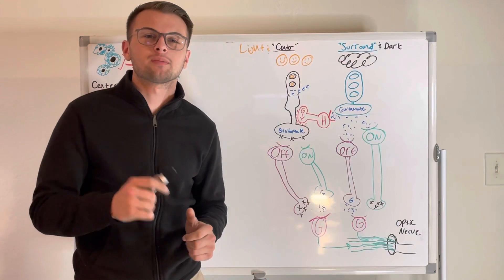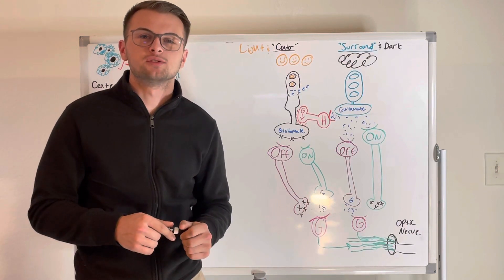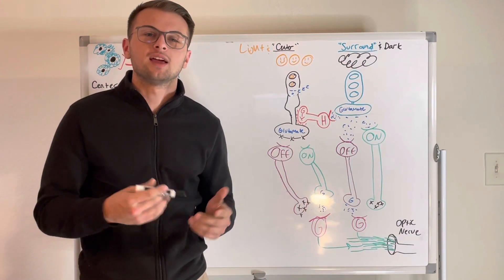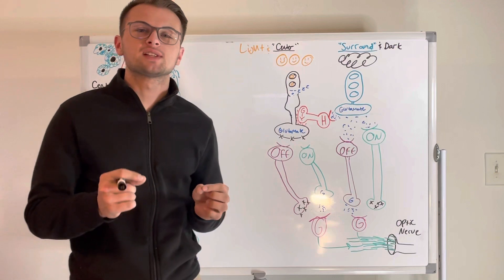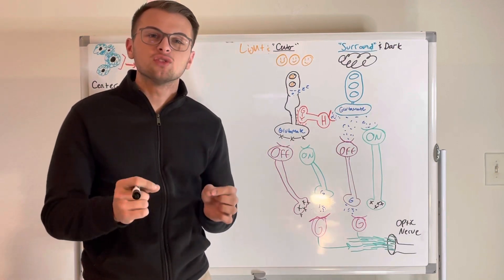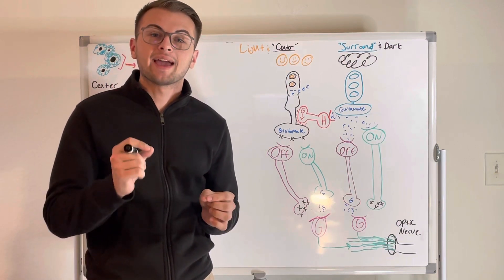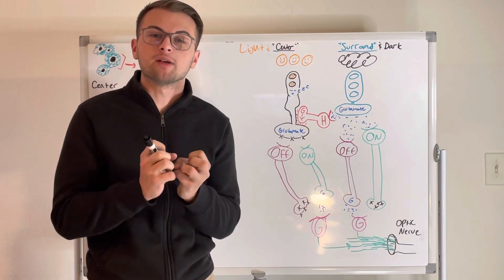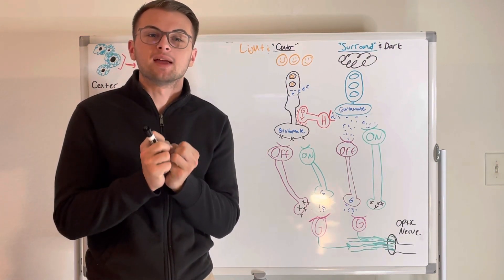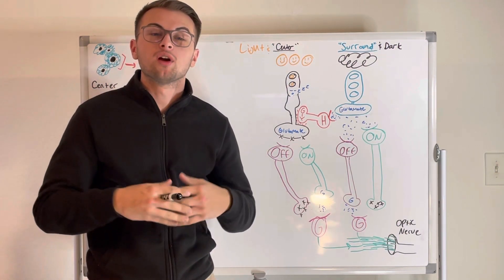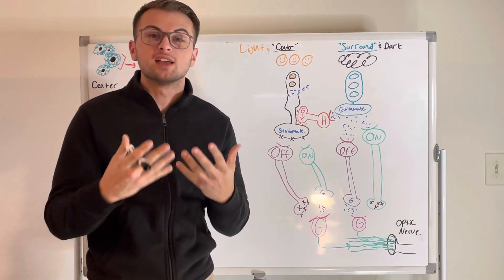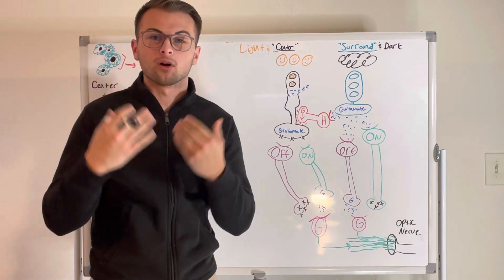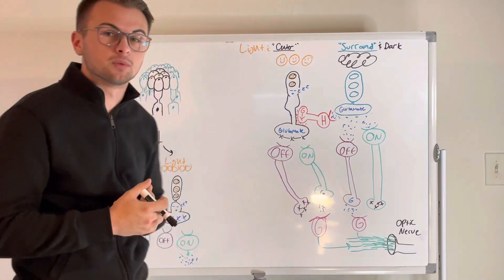Hello everyone and welcome back to Clinical Cousins YouTube channel. Today we're going to go over how specific cells in the retina capture visual images and then make them into more clear and more precise images for our brain to interpret.